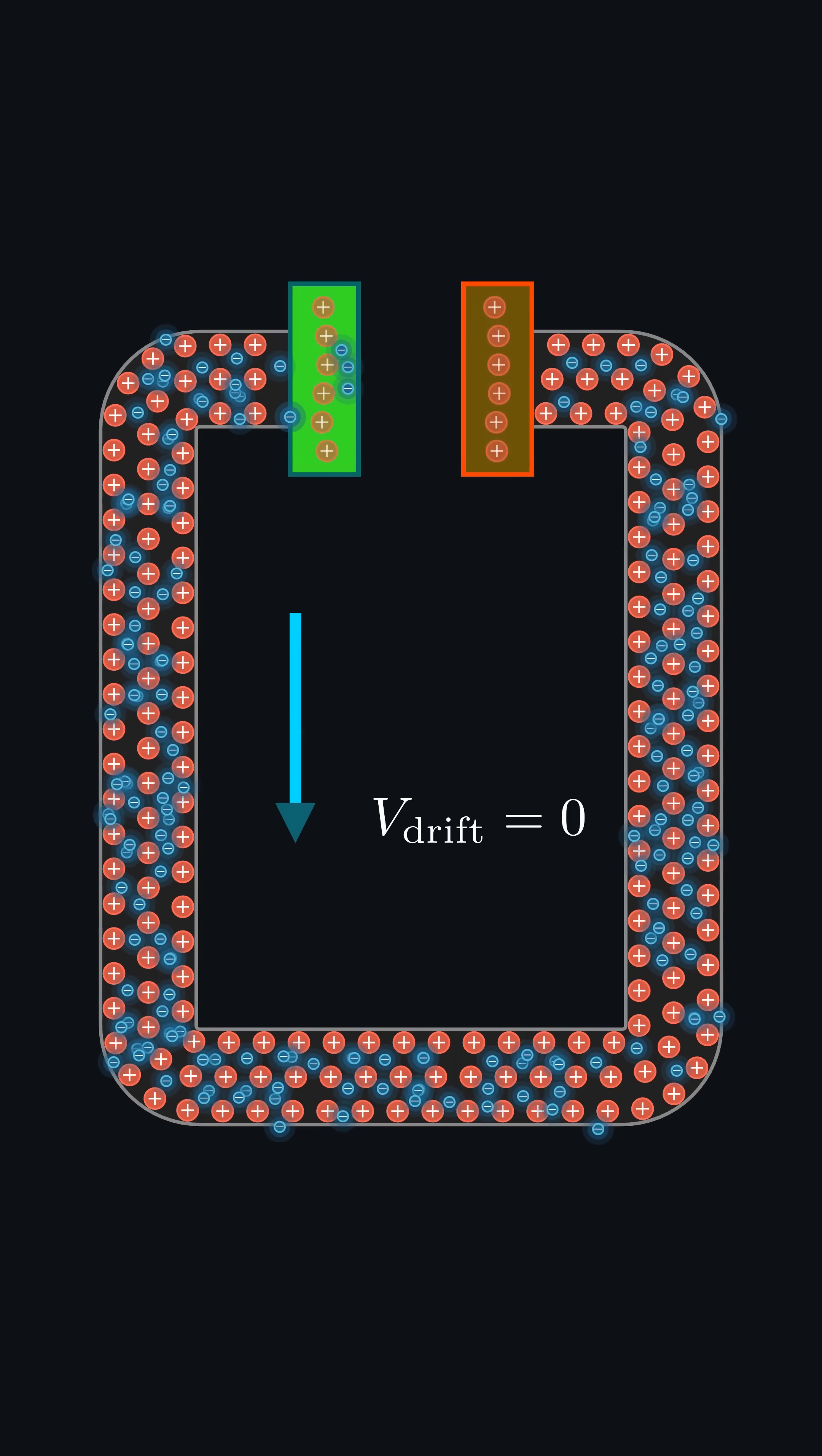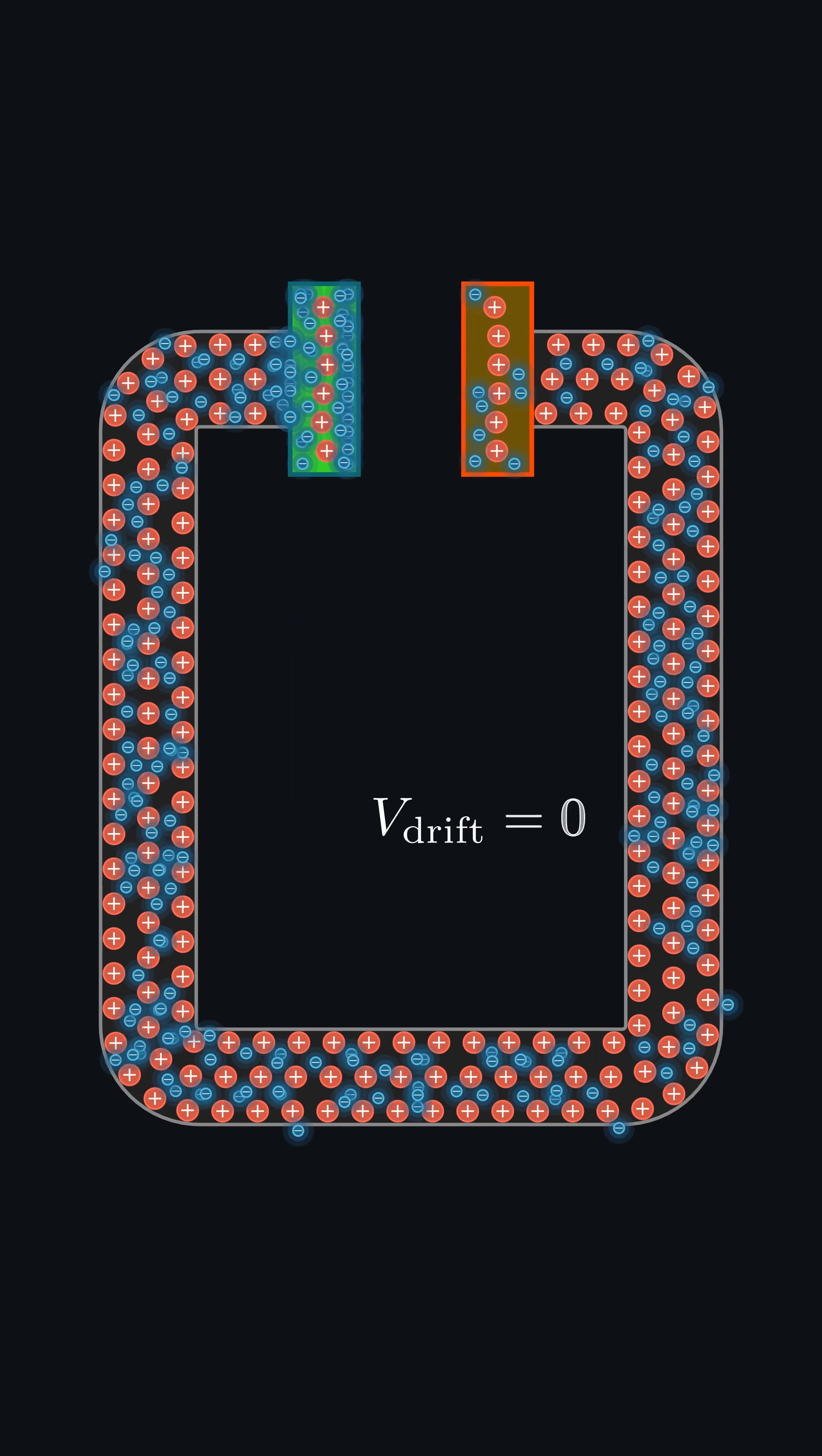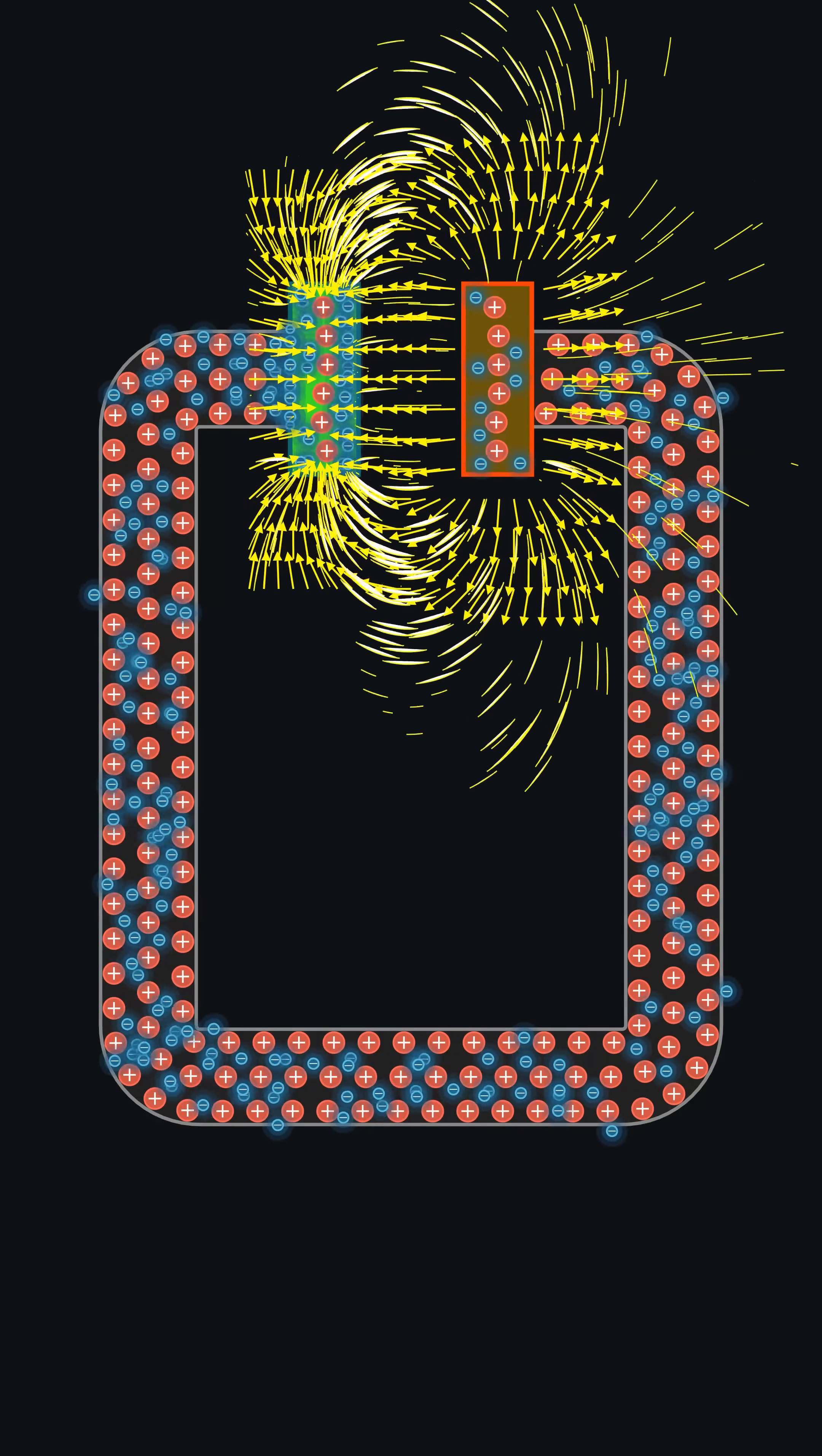But the moment we connect one end of the wire to a negatively charged plate and the other to a positively charged plate, everything changes. An electric field appears between the plates, invisible yet powerful. This field instantly steers the electrons.